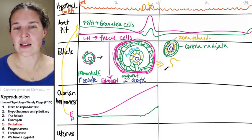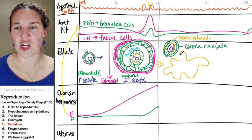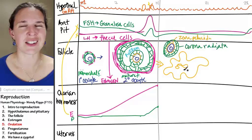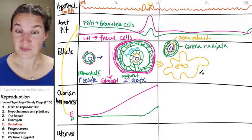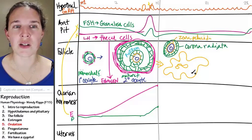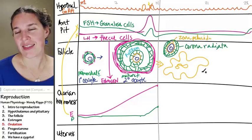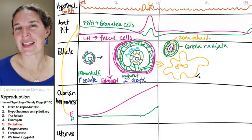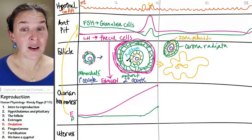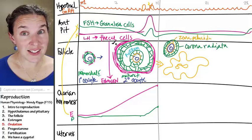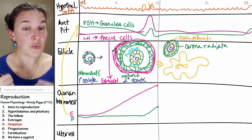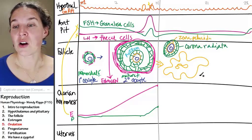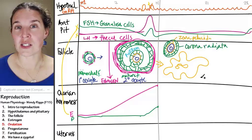Well, the follicle turns into this giant, glandular. That's what it is. A glandular structure made up of granulosa cells and fecal cells which can produce what? It's called the corpus luteum. Corpus luteum.